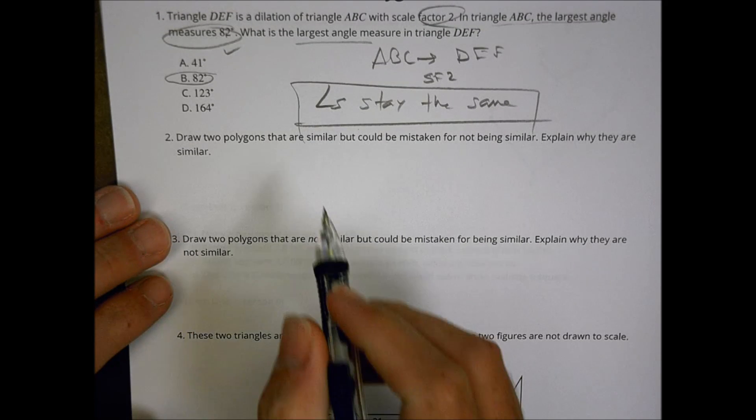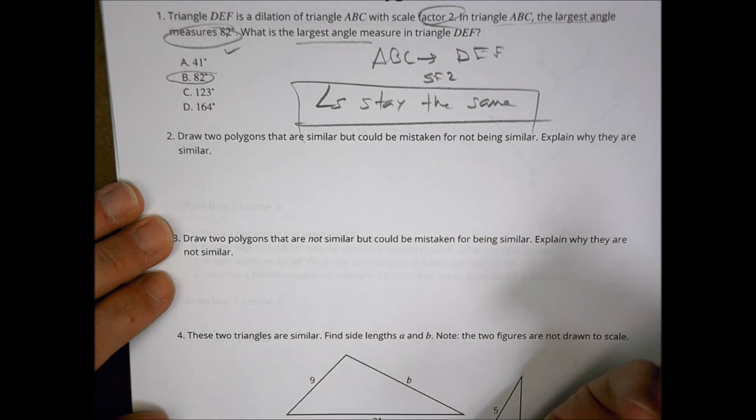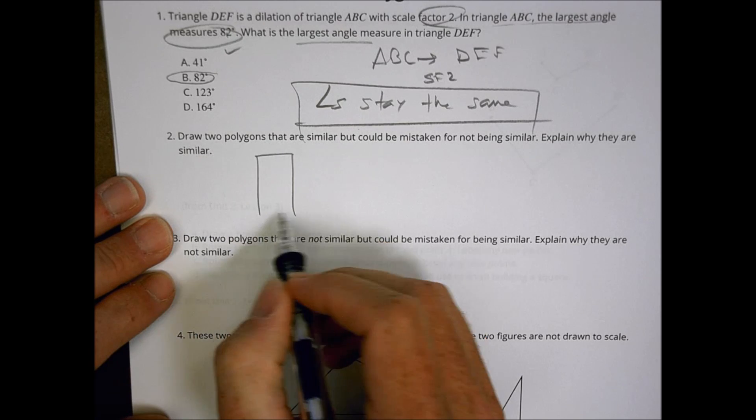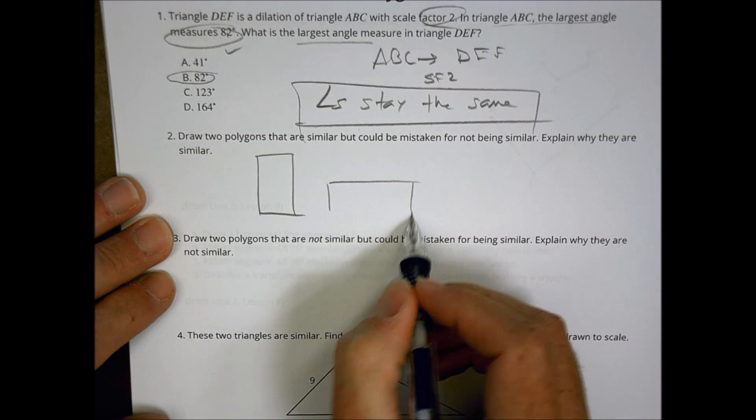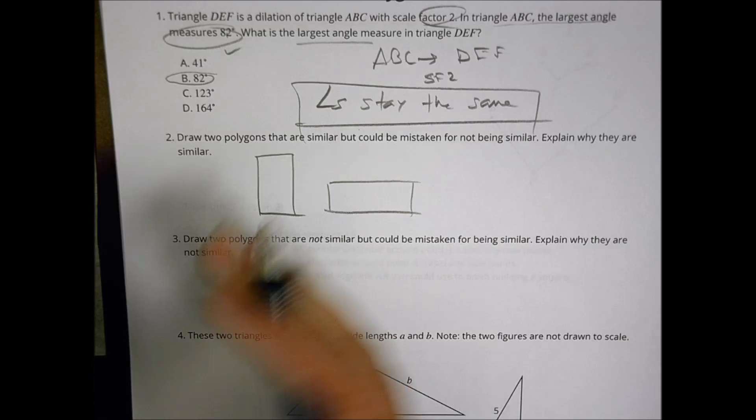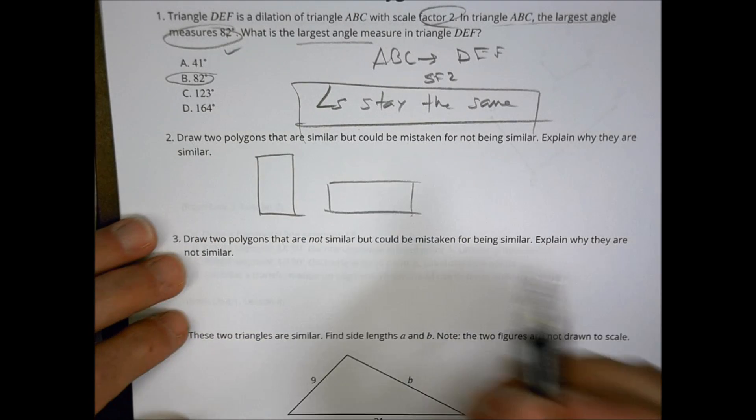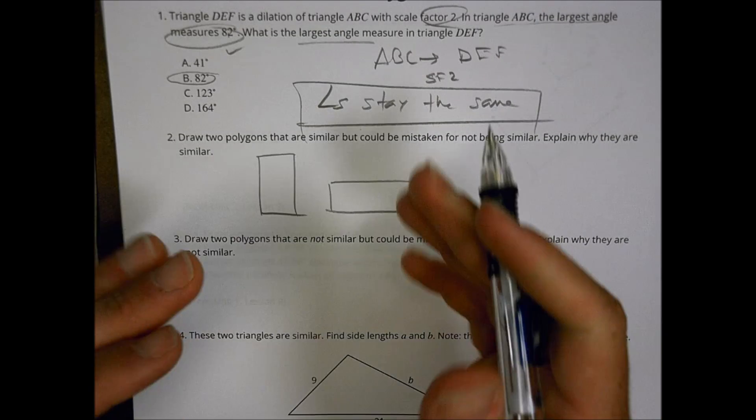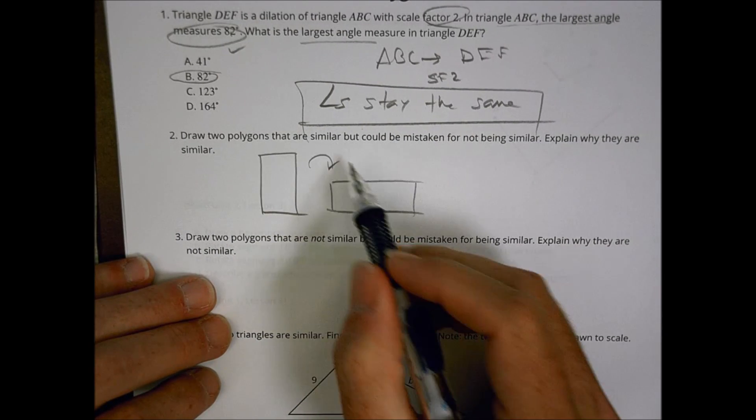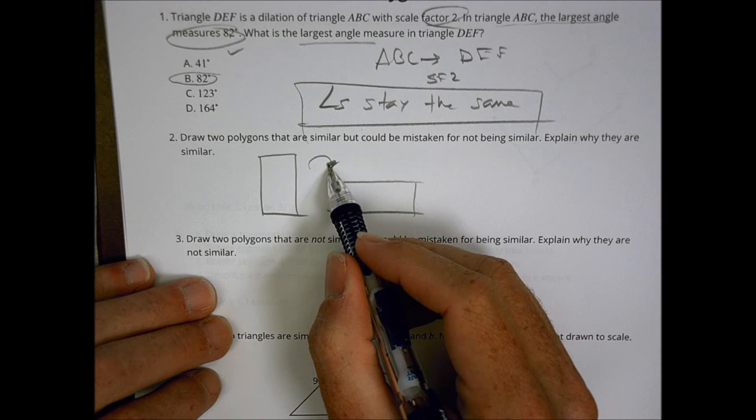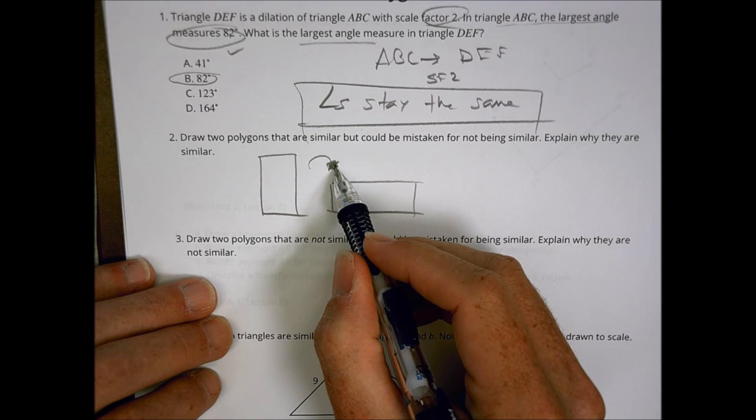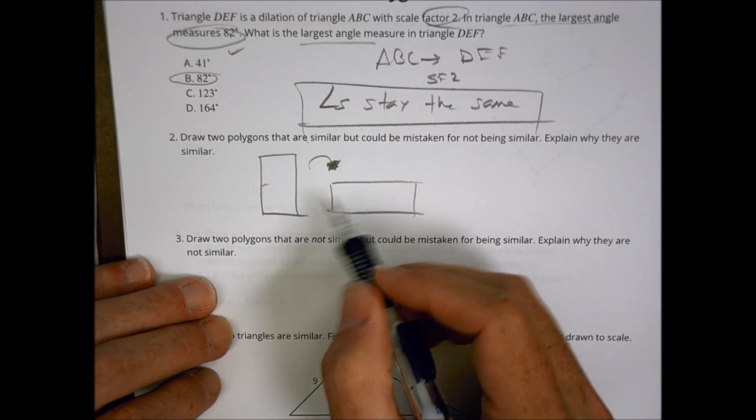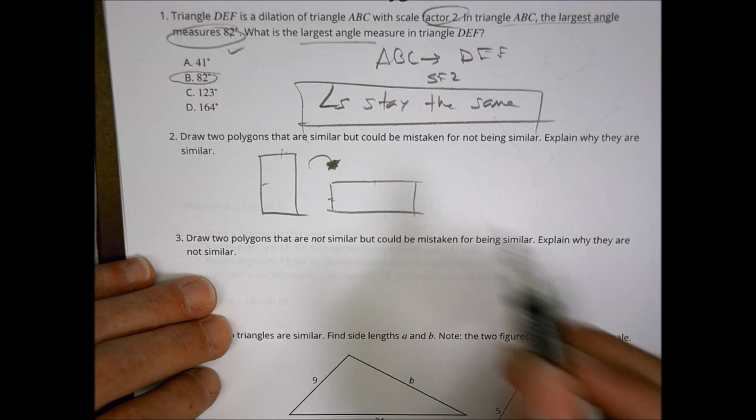Number 2. Draw two polygons that are similar but could be mistaken for not being similar. So maybe I have a rectangle like this and maybe I drop it down on that side like that. Let's say they were the same length. Well, someone might look at it and say, they're not similar because they're facing the wrong direction. Because I did a rotation or a translation maybe, I think it's different. But that's okay. We might be able to prove it by showing the side lengths are equal to each other and things like that.